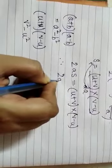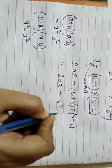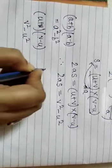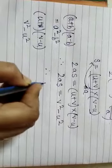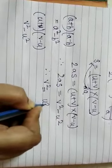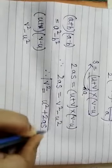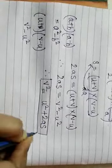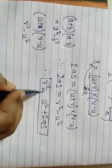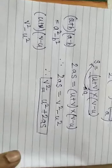So here it becomes 2as is equal to v square minus u square. So my third equation, Newton's third equation says v square is equal to u square plus 2as. Hence proved. So what does the equation say? v square is equal to u square plus 2as. I am explaining the whole equation again. Pay attention.